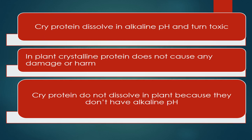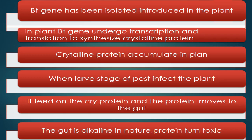The BT gene undergoes transcription and translation to produce this crystalline protein. It dissolves in alkaline pH, and when the cry protein dissolves in alkaline pH it turns toxic. In plants, this crystalline protein does not cause any damage because plants do not have alkaline pH. Scientists isolated the BT gene from Bacillus thuringiensis and introduced it into plants, where it undergoes transcription and translation to form the crystalline protein, which accumulates in the plant.